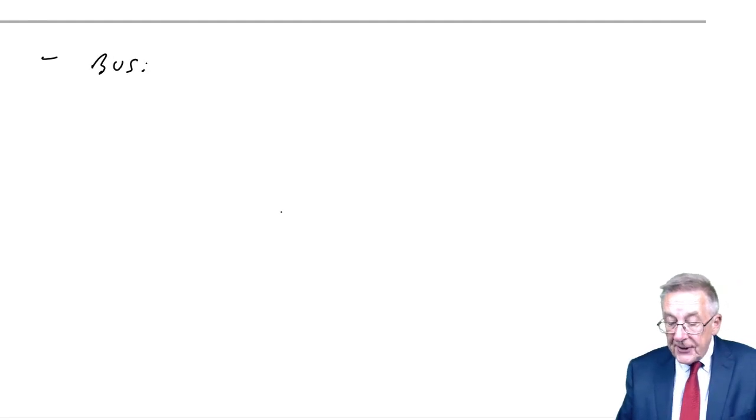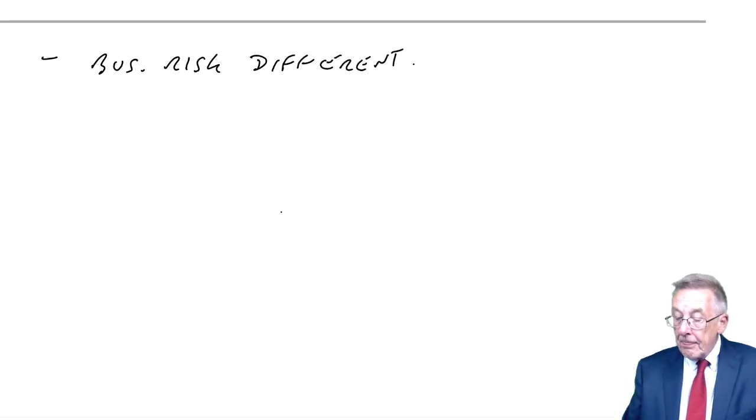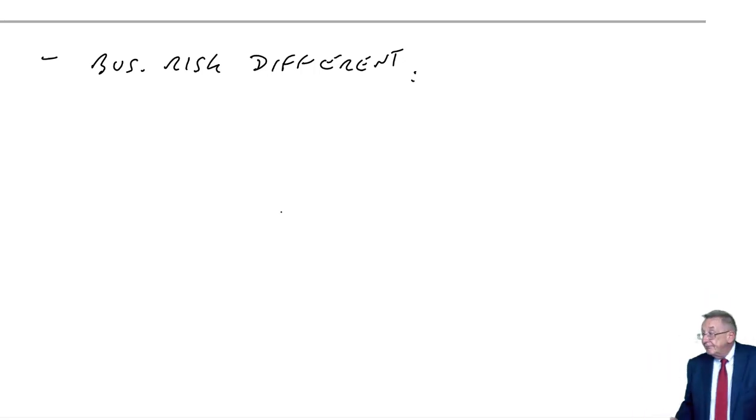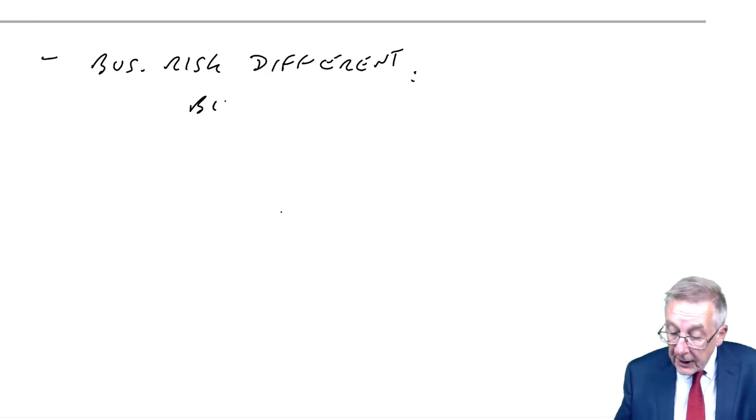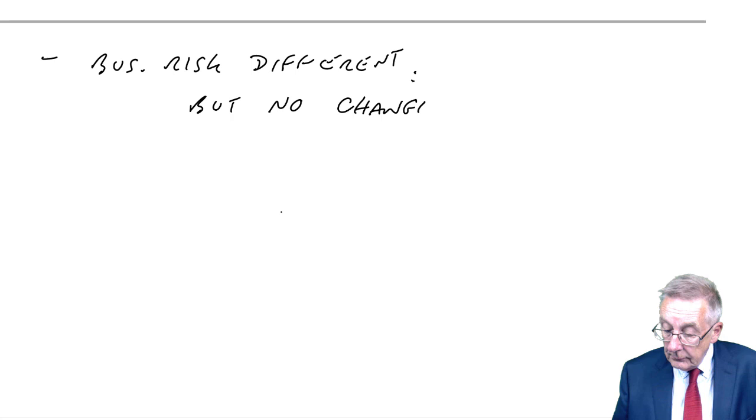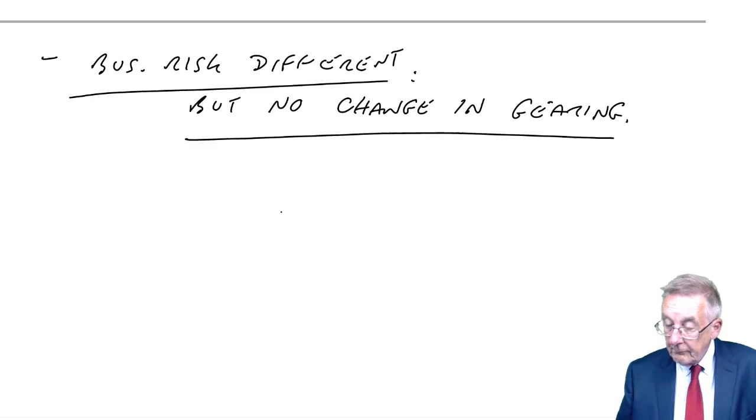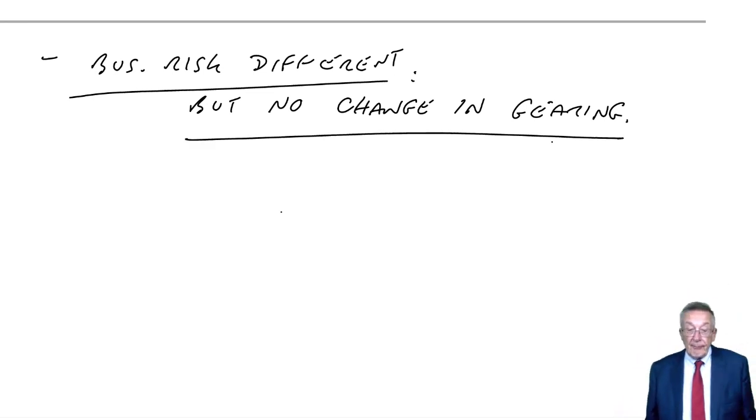It's where the business risk is different. So we're an oil company, we're taking over another company, which is a telephone company, a completely different level of business risk. But no change in the gearing. So there's a second possible situation. And I've written the steps down below. But to illustrate the steps, look at example three. You will see it's something we have done before, effectively, it's a bit of revision.